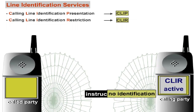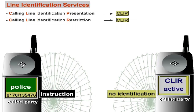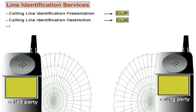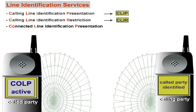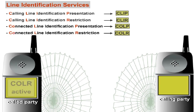An appropriate instruction is sent from the caller's network to the network of the recipient. Some networks allow particular user groups, such as the police, to identify a call number even if the CLIR service is activated. In accordance with CLIP and CLIR, there is the connected line identification presentation, COLP, for identification of the called party by the caller, and connected line identification restriction, COLR, if the called party does not want to be identified by the caller.